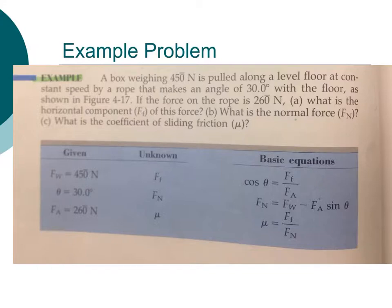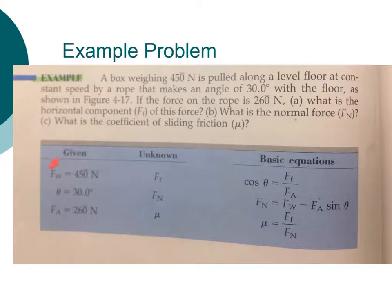Here we have an example where a box weighing 450 N is pulled along a level floor at a constant speed by a rope. It makes an angle of 30 degrees with the floor. If the force on the rope is 260 N, we want to find: the horizontal component or force of friction, the normal force, and the coefficient of sliding friction. Our given information: angle is 30 degrees, weight is 450 N, force on rope is 260 N.